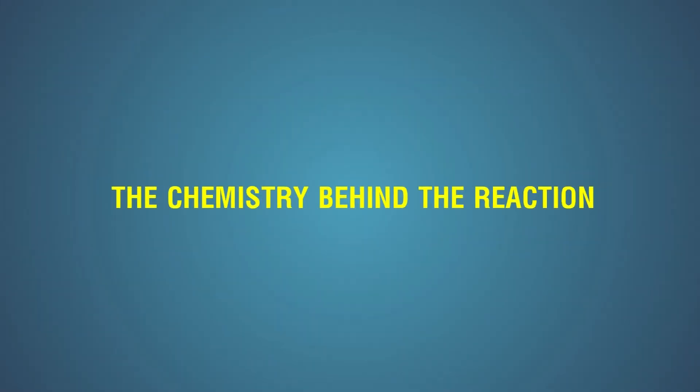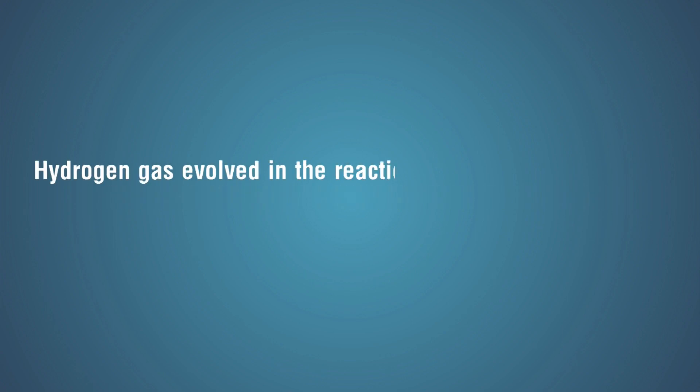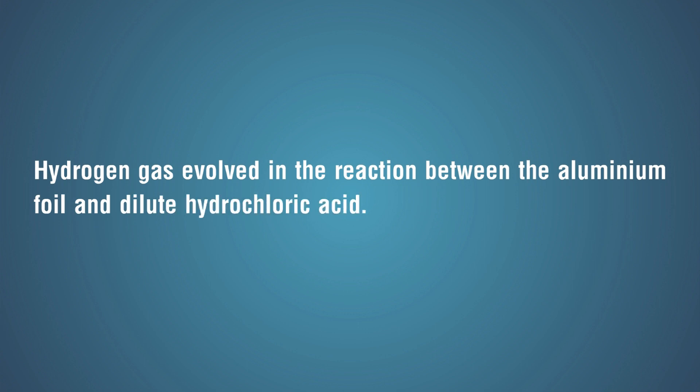The chemistry behind the reaction: hydrogen gas evolved in the reaction between the aluminium foil and dilute hydrochloric acid. Aluminium plus dilute hydrochloric acid gives aluminium chloride plus hydrogen gas.